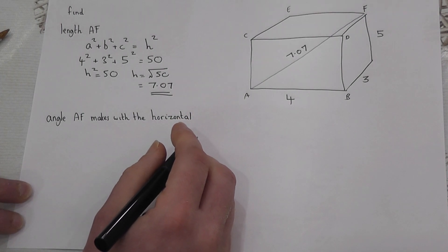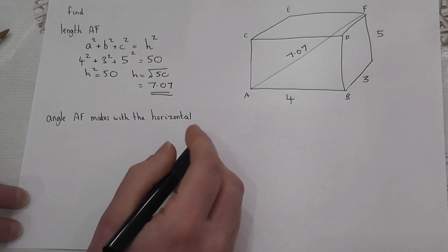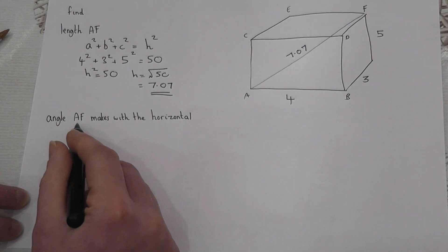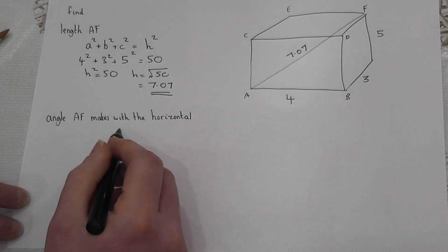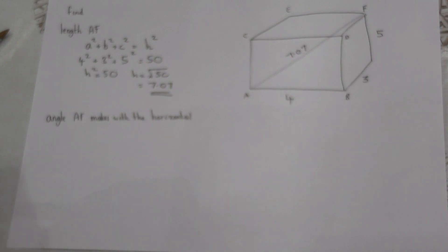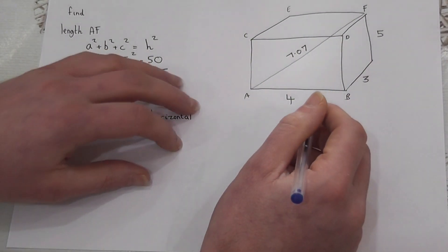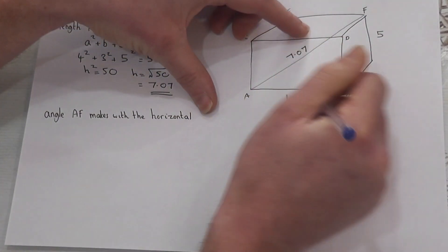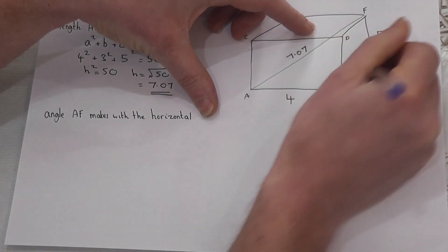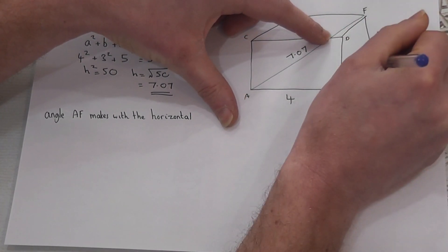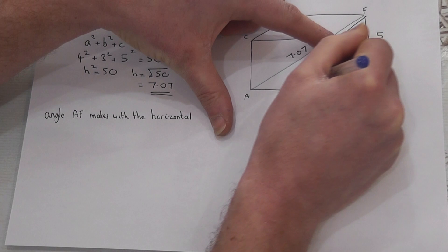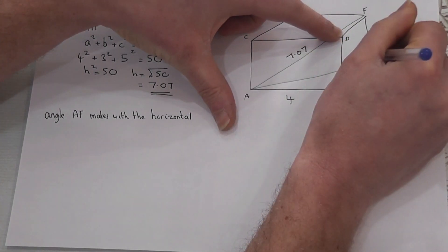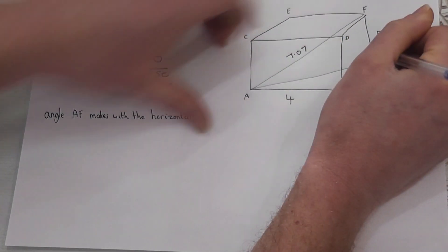Now a more challenging question is the angle that this line AF makes with the horizontal. Within this cuboid there is a right-angled triangle. If I add on this triangle here, this here is right-angled.